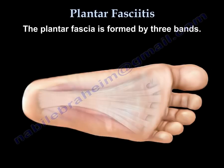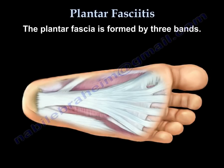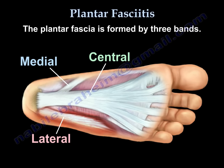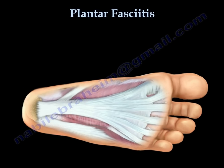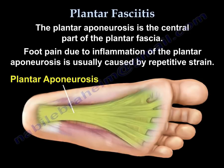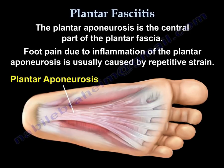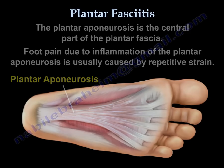The plantar fascia is formed by three bands: the medial band, the central band, and the lateral band. The plantar aponeurosis is the central part of the plantar fascia.